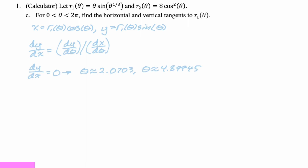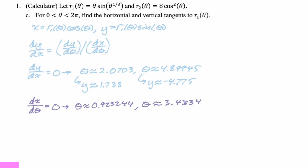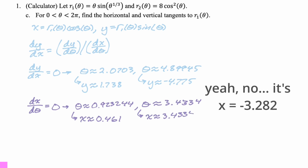Writing up the solution: where dy/dx equals zero, we got theta = 2.0703 and 4.89945. Plugging those into Y gave y = 1.738 and y = negative 4.775 — those are the horizontal tangent lines. Where dx/d-theta equals zero, we got theta = 0.9232 and 3.4334. Plugging those into X gave x = 0.461 and x = negative 3.282 — those are the vertical tangent lines.